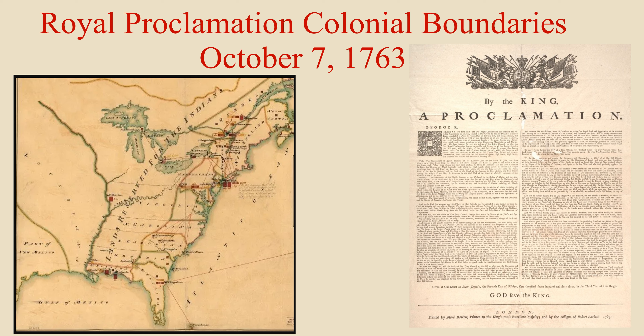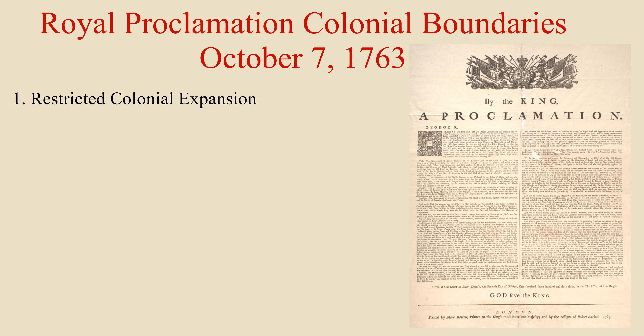The Royal Proclamation of October 7th, 1763, known as the Royal Proclamation of Colonial Boundaries, established restrictions on the English colonies from expanding their borders into land newly acquired from the French following the French and Indian War.